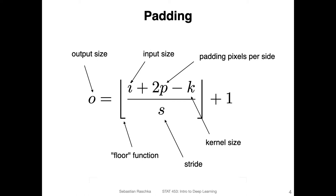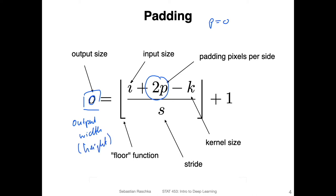Here is the equation for computing the output size of a convolutional layer. Last time, we regarded padding as p equals zero, so that term canceled. Now we can consider this equation with non-zero padding. The output width is computed as the input width plus two times the padding amount, minus the kernel size, divided by the stride — floored — plus one. The same applies for the height.